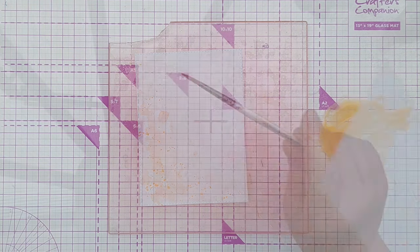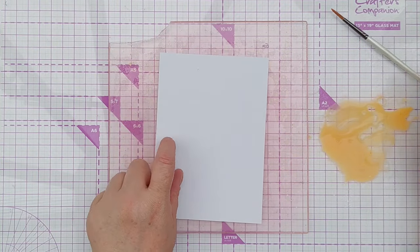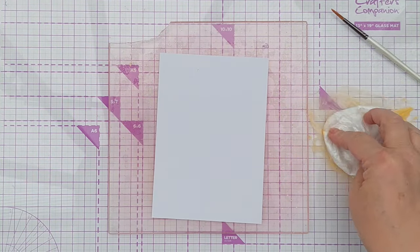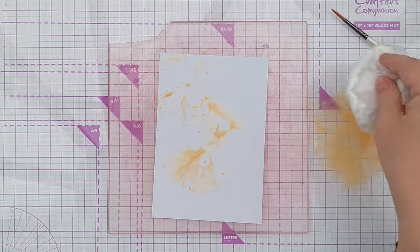I didn't want to waste any of that lovely sparkly paint so I used my smusher to add it to a spare piece of paper which I left to dry.